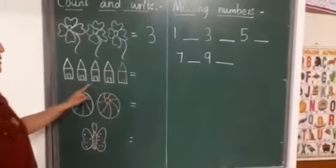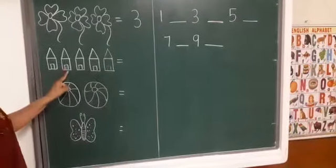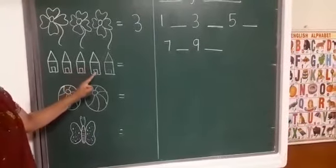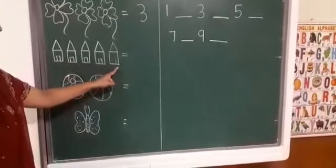How many houses are there? One, two, three, four, five. Five houses are there. Write here number five. Number five.